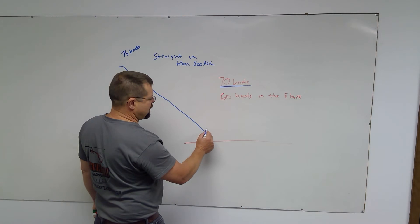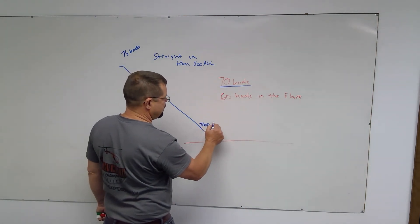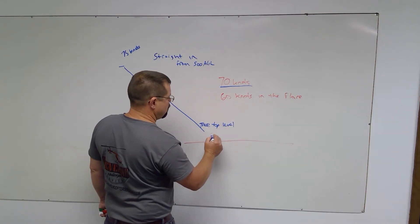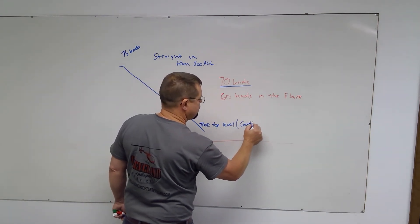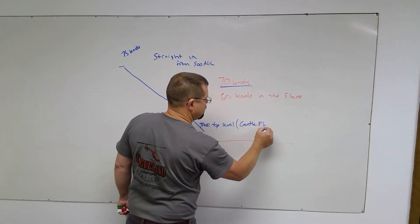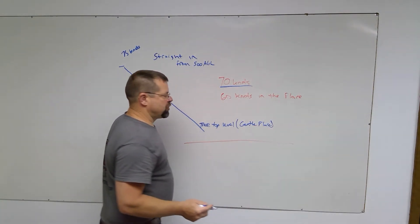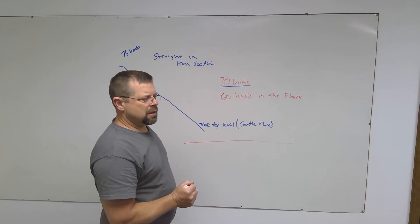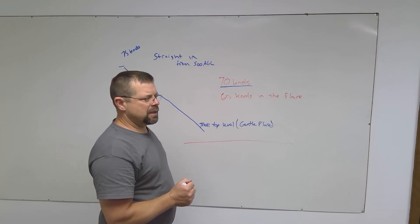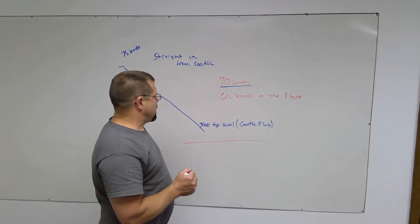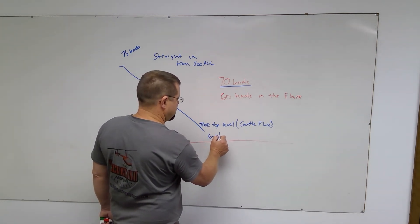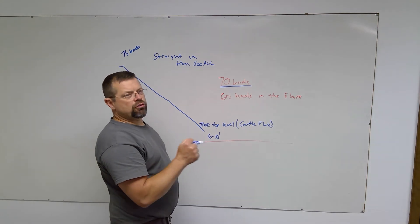When you get to about treetop level, you will do a gentle flare. Gentle flare—I mean you're going to come back on the cyclic slightly to start a gentle flare. You'll start losing some forward speed. Then as you get closer to the runway, 6 to 10 feet, you will do a more aggressive flare.